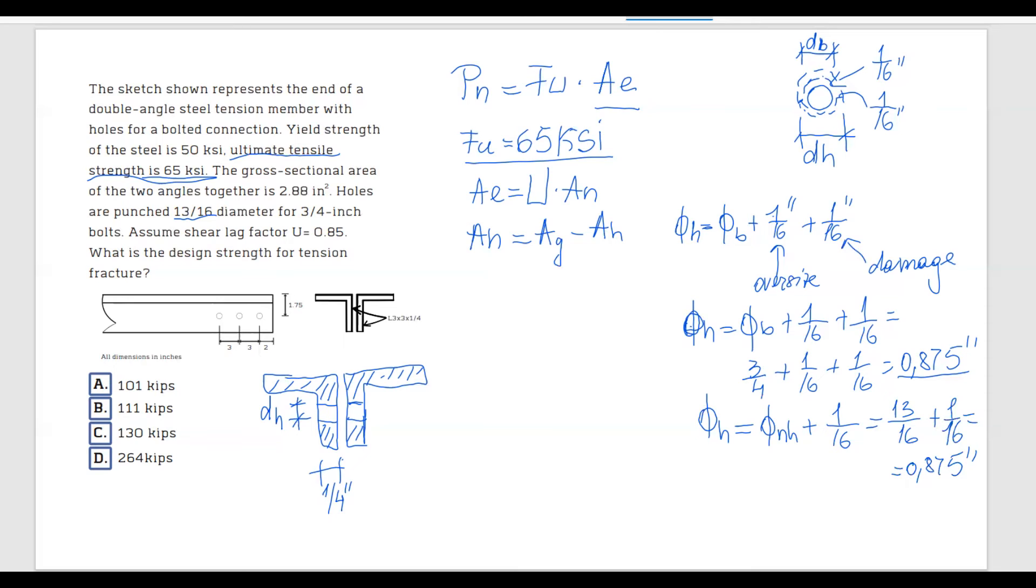So now that we have the diameter of the hole, we can calculate the net area. Going back here, we have AN equals gross area, which is given in the problem, 2.88. So we're going to do 2.88 minus...